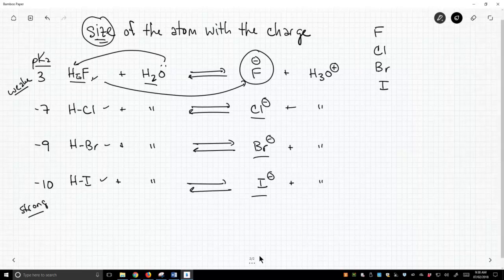So what this tells us: if HF is a weaker acid, that means fluoride must be the stronger base. Why would that be? Well, fluoride is kind of small relative to these other species. And of course, iodide is large, or at least the largest in this series.